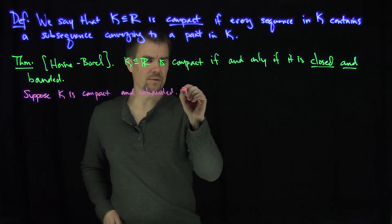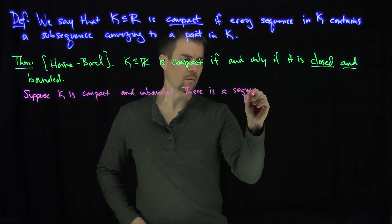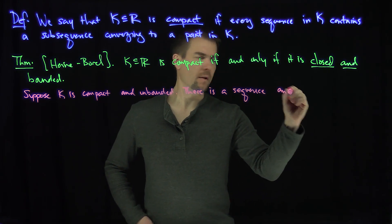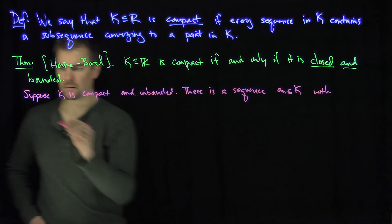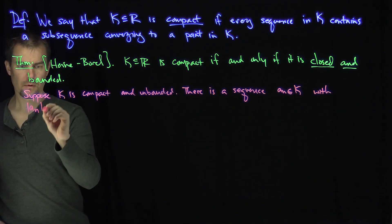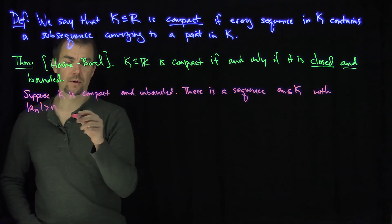So then I can find a sequence. There is a sequence a_n in our set k with a_n strictly bigger than n. That's what we can do about unboundedness.